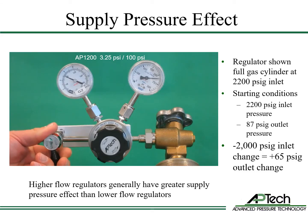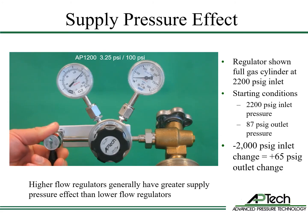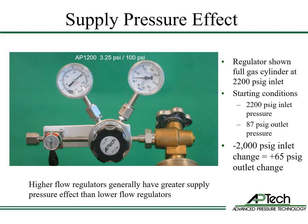Now let's look at supply pressure effect in an AP1200 regulator. In this example, the inlet pressure is 2200 psi and the outlet pressure is 87 psi. As the inlet pressure drops to 200 psi — the pressure when cylinders are often changed — the outlet pressure continues to rise. The 2000 psi drop in inlet pressure causes a 65 psi increase in outlet pressure. The AP1200 supply pressure effect is 3.25 psi per 100 psi. Higher flow regulators generally have greater supply pressure effect than lower flow regulators.